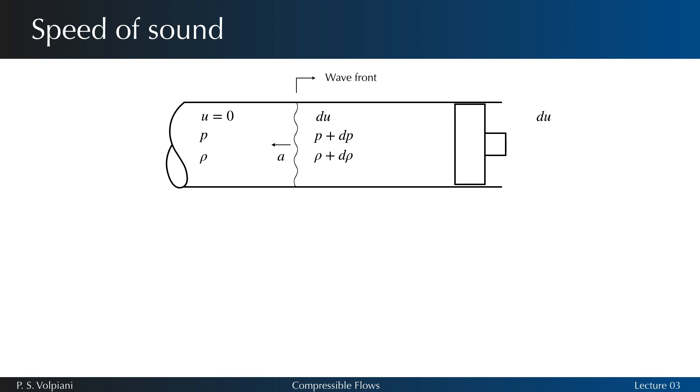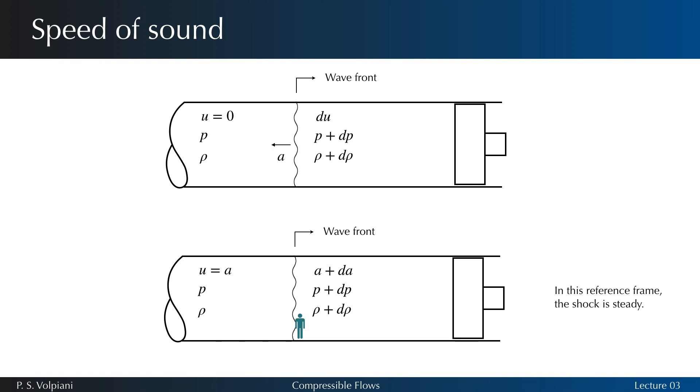The sound wave itself is a thin region of disturbance in the air across which the pressure, temperature, and density change slightly. Imagine now that we hop on the sound wave and move with it. This procedure changes the frame of reference to the wave front. We went from an unsteady problem to a stationary flow which is easier to analyze. Note that this is equivalent to superimposing on the entire flow field a constant velocity to the right of magnitude a.